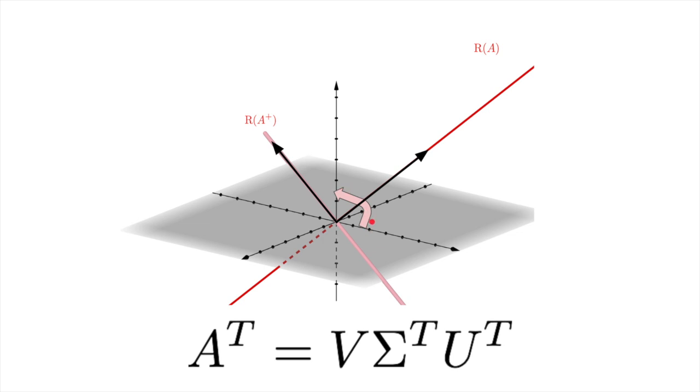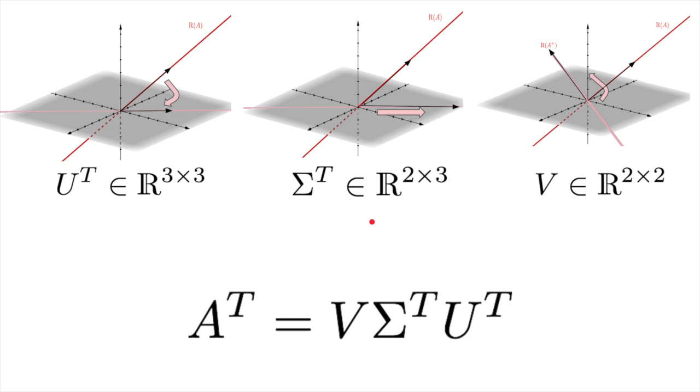So there you have it! The transpose acts very similarly to the pseudo-inverse. It undoes the first rotation of the original transformation, stretches the vector by the same amount, and then undoes the second rotation. This is amazing! Just turning the columns of the matrix into rows undoes the rotations while keeping the stretching the same. This means that A and A transpose allow you to translate some important space, in this case the range of A, between two spaces, in this example R2 and R3.